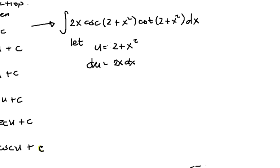Now we can simplify this integral. As you can see, our u replaces these terms, so we have cosecant u cotangent u.